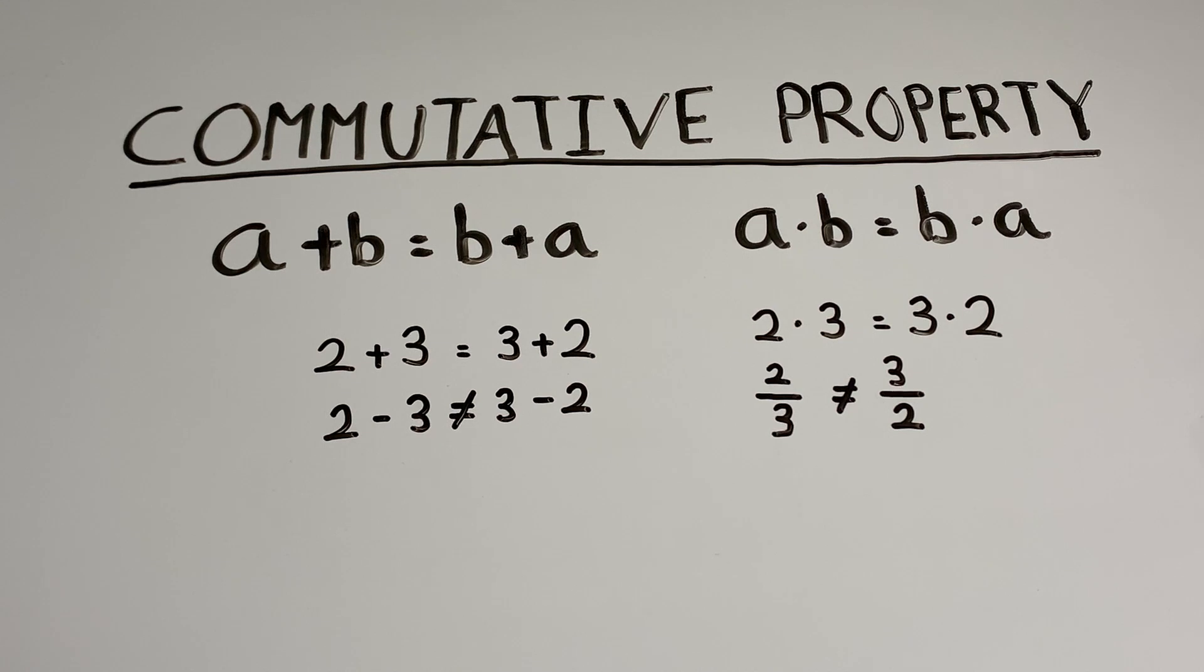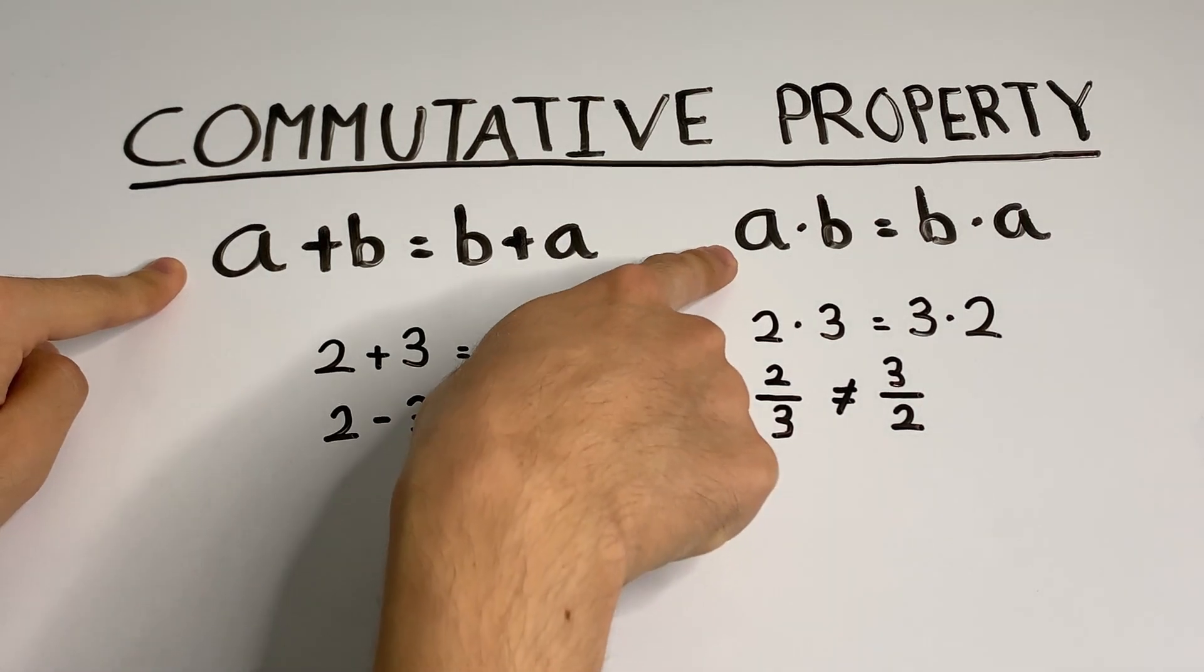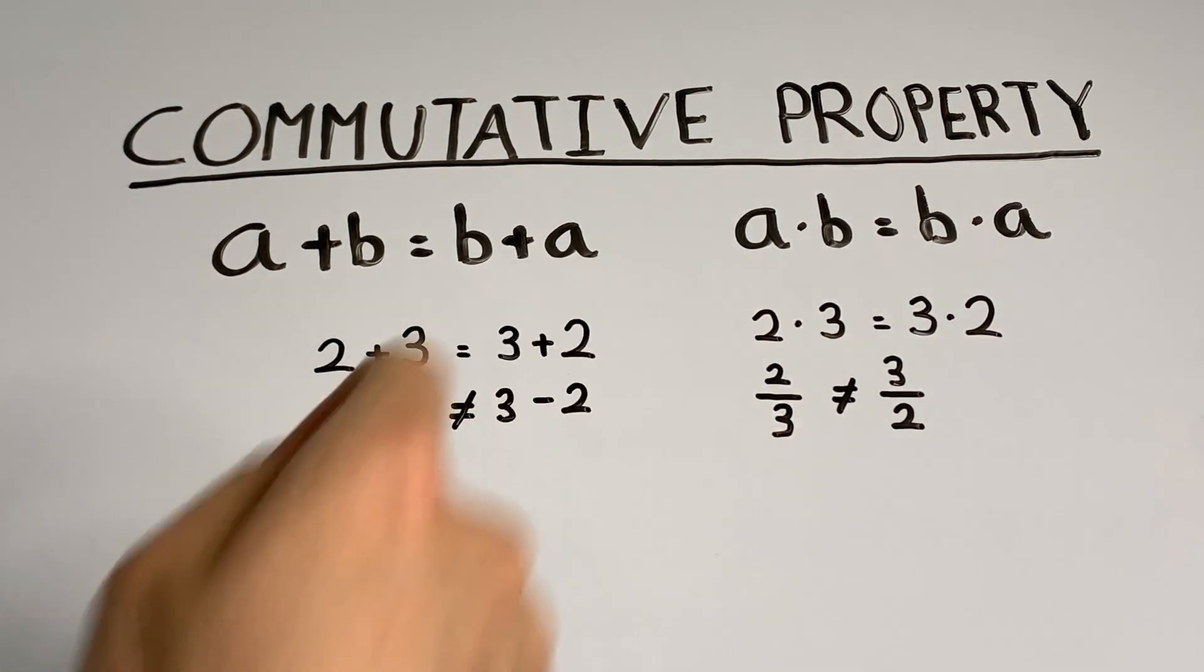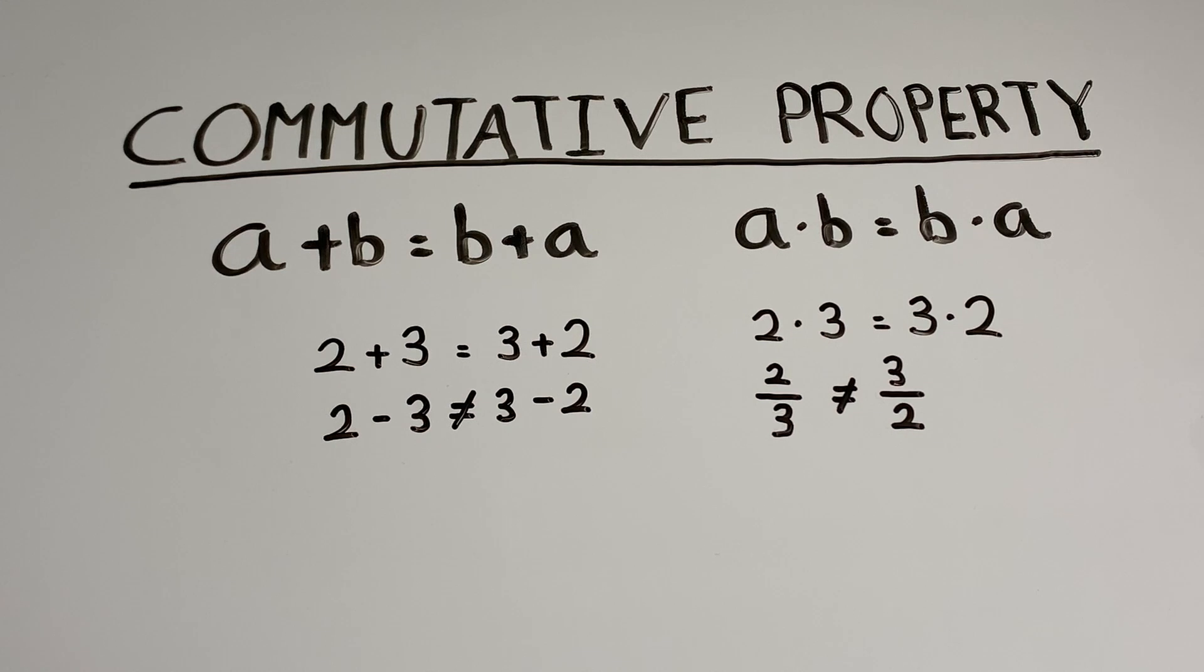So for any two numbers a and b, we have a plus b equals b plus a, and we also have a times b equals b times a. Addition and multiplication are commutative.